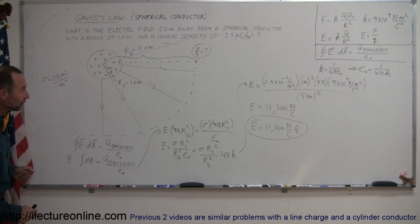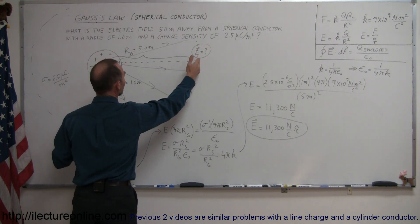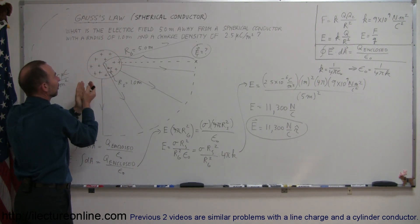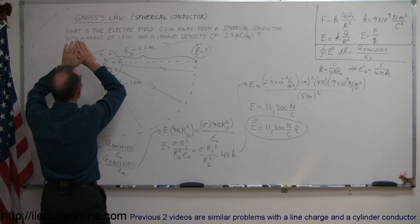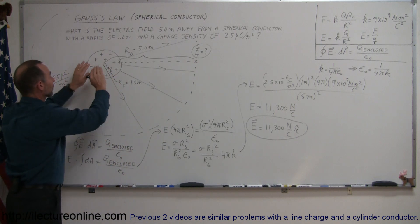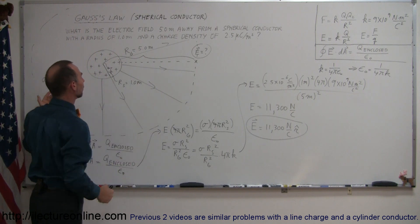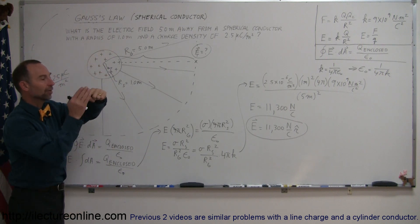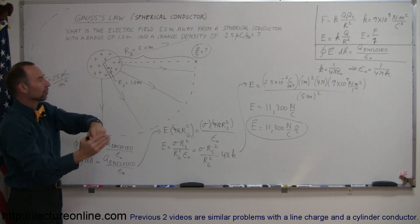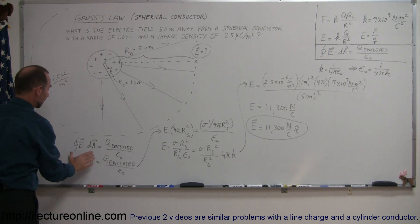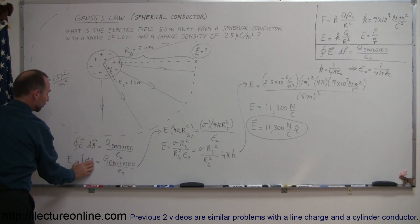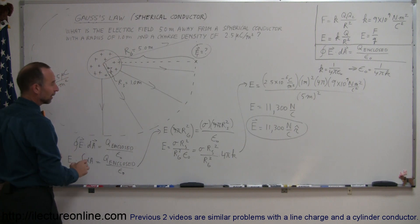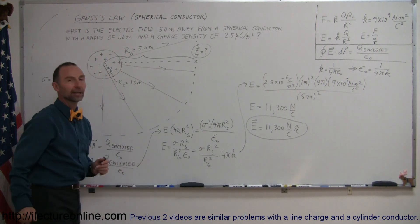To summarize: to find the electric field strength at some distance from an object containing charge — in this case a spherical conductor with charge on its surface — we draw an imaginary Gaussian surface around it. Since the object is a sphere, the Gaussian surface should also be a sphere, so the electric field is radially outward and the same everywhere along the Gaussian surface. Using Gauss's law, E times the surface area equals charge enclosed divided by epsilon sub nought; then plug in the numbers and out comes the answer.